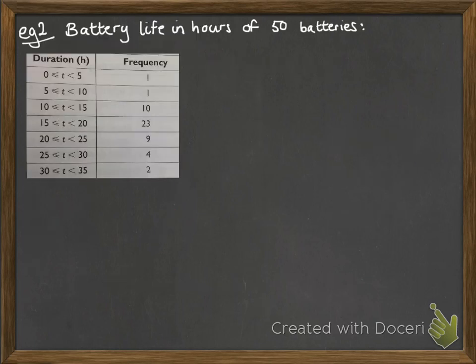Let's look at this with an example. We have the battery life in hours of 50 batteries. The first thing to do is add up those frequencies as a cumulative frequency. We've just done that at the side — we add another column to our table or whatever's needed.